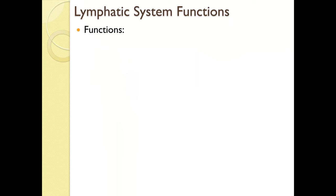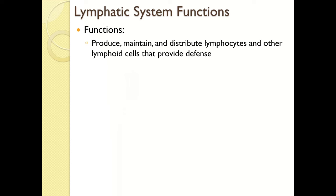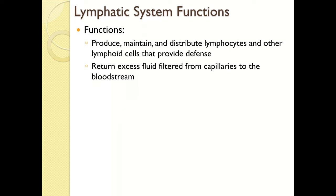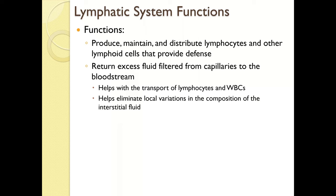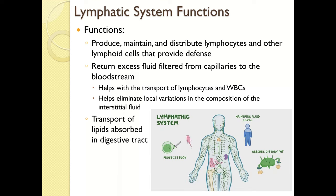What does the lymphatic system function for? First, it produces, maintains, and distributes lymphocytes and other lymphoid cells that provide defense. It also returns excess fluid filtered from capillaries back to the bloodstream, and helps transport lymphocytes and white blood cells through tissues and organs. The excess fluid also helps eliminate local variations in interstitial fluid composition. The lymphatic system also transports lipids absorbed in the digestive tract, covered more in Chapter 24. Overall, its three main functions are: protection of the body, maintaining fluid levels, and absorbing dietary fat.